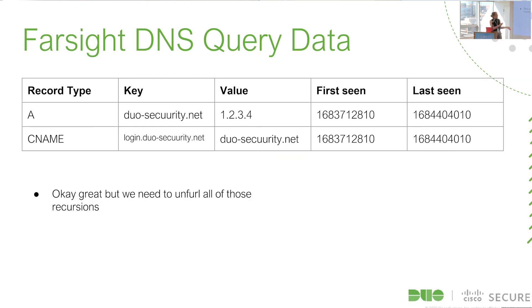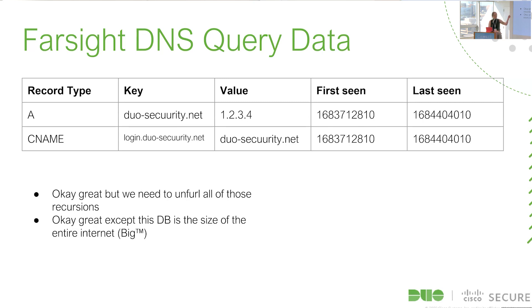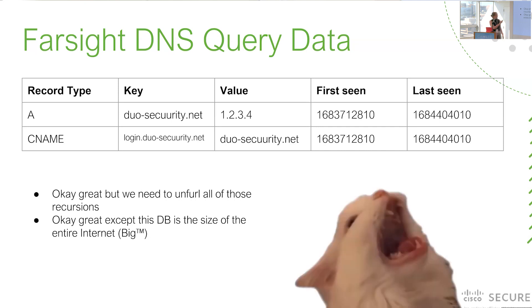There are two problems before we can align this with our auth log data. First, we need to unfurl potentially infinite recursions of hostname-to-IP and hostname-to-other-hostname chains — for example, domain A points to IP 1234, and then a thousand domains point to domain A. This matters because the domain in the A record was often just a load balancer. The second problem: this table was the size of the entire internet — every DNS query record for a full month, two terabytes. I'm sorry about the AWS bill.